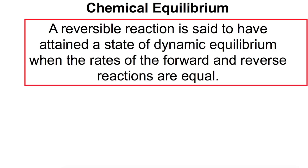Hi and welcome to this video looking at chemical equilibrium. A reversible reaction is said to have attained a state of dynamic equilibrium when the rates of both the forward reaction and the reverse reactions are equal. This does not mean that the concentrations of reactants and products are equal. If you have more reactants than you have products when you are at equilibrium, then your equilibrium is said to lie to the left.